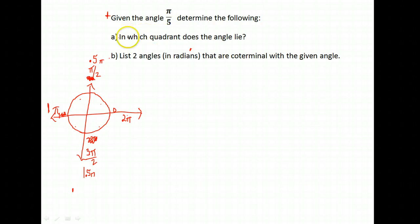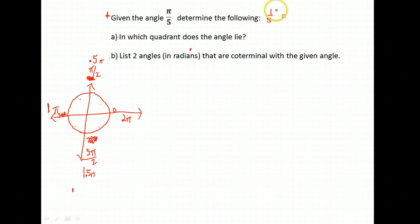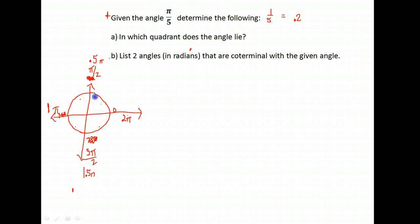For example, in which quadrant does π/5 lie? Take the fraction you're given — π/5, that's one-fifth π — and write the decimal for it. You take the top divided by the bottom and get 0.2. Since we're more used to comparing decimals than fractions, 0.2 is located between zero and 0.5, so the angle is in quadrant one.